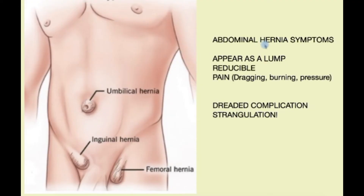In this short video we will talk about the symptoms that abdominal wall hernias cause as well as the different types of hernias, so if you have one you should be able to recognize it. Typically, all hernias appear as a lump — you can see them popping out at different points of weakness within the abdominal wall, as illustrated in this picture.